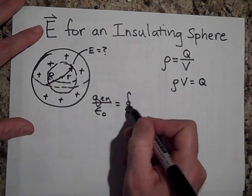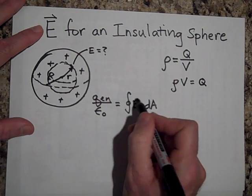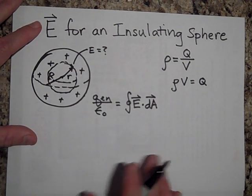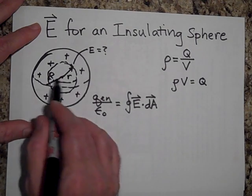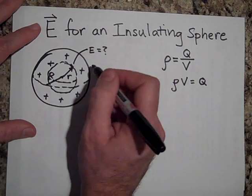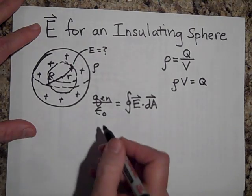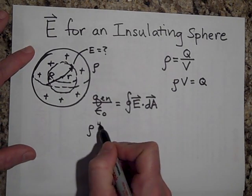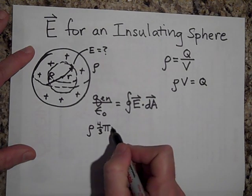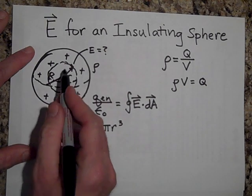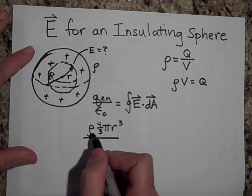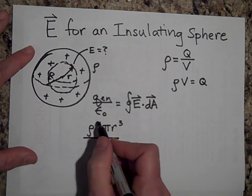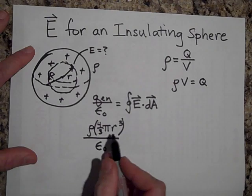The net flux is the closed surface integral of E dot dA, where you add up all the little fluxes through all the little windows. Since the charge is uniformly distributed with density rho, the charge enclosed by the Gaussian sphere is rho times the volume of that sphere: four-thirds pi times little r cubed. So the right-hand side is rho times four-thirds pi r cubed, all over epsilon-naught — that's Q enclosed over epsilon-naught.